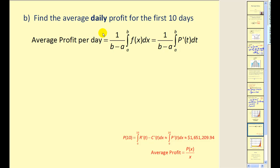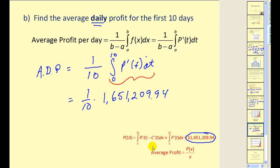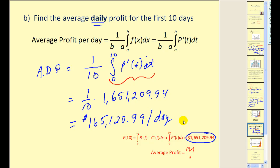Now, to find the average daily profit for the first ten days, we want the average value of the marginal profit function. Be careful not to use the profit function itself, since we want the average daily profit. The average daily profit equals one over b minus a — with b equal to ten and a equal to zero — times one-tenth times the definite integral of the marginal profit function. Since we already calculated this integral, we multiply one-tenth by the total profit. Dividing by ten shifts the decimal one place left, giving an average daily profit of $165,120.99 per day for the first ten days.